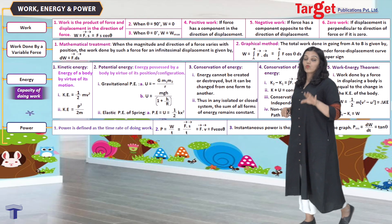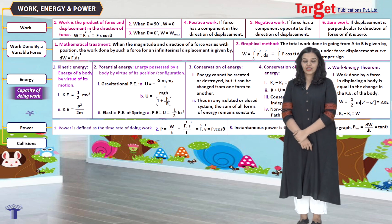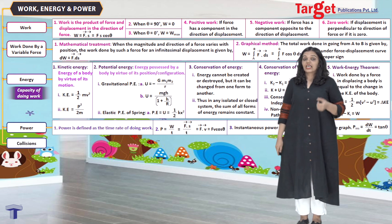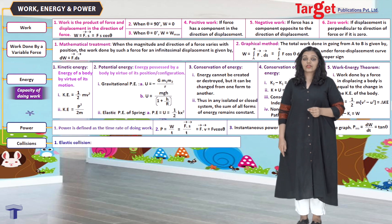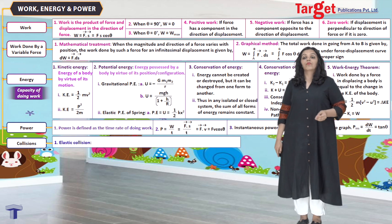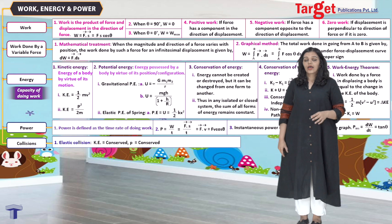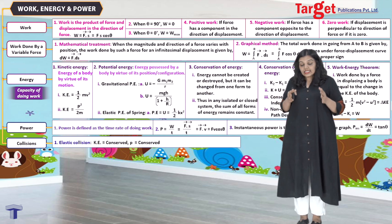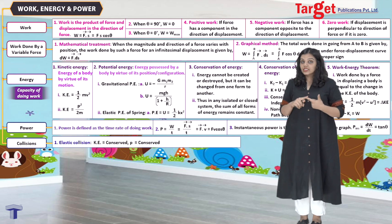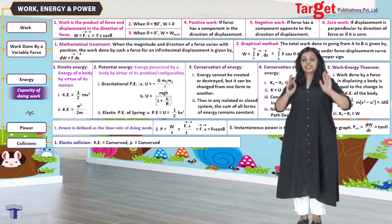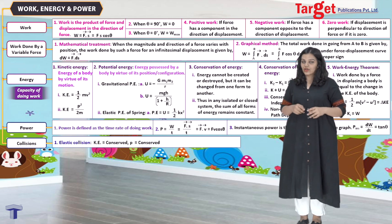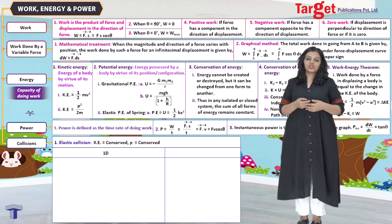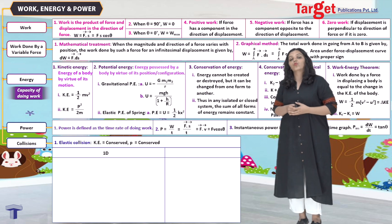We finally come to the section on collisions, by far where most problems in this chapter are based. There are two main types: elastic and inelastic collisions. Elastic collisions are those in which both the kinetic energy and the linear momentum of all objects involved are conserved — meaning they are the same at the beginning and at the end. Let's take a look at a one-dimensional elastic collision.